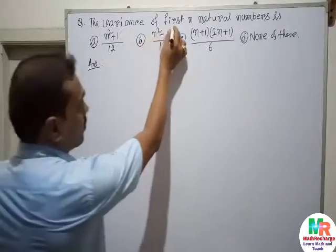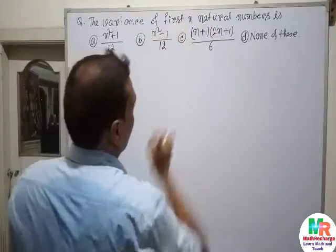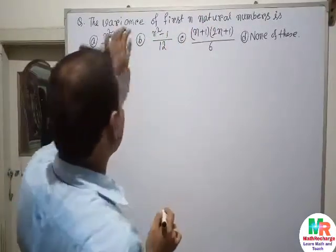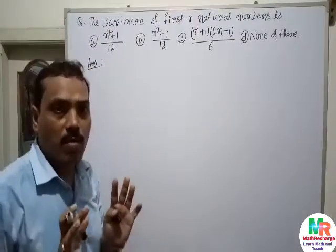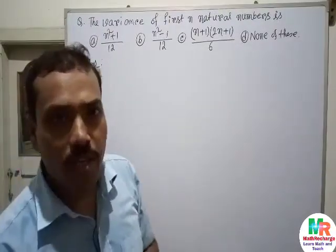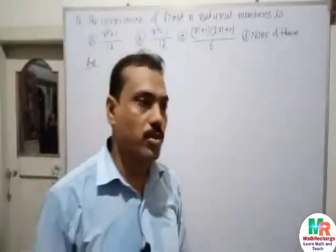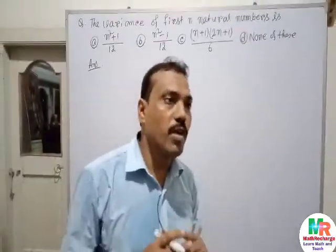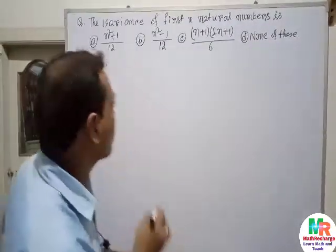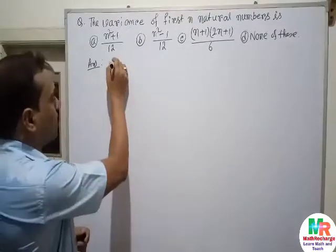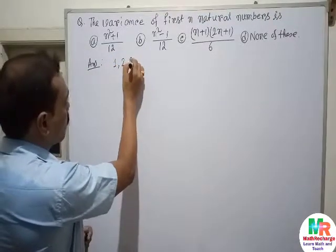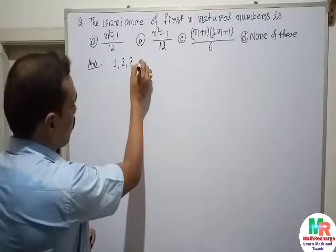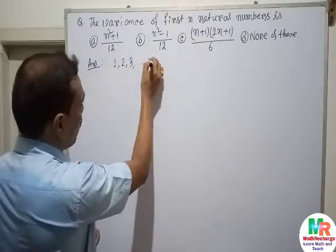The question asks for the variance of the first n natural numbers. We consider the first n natural numbers: 1, 2, 3, ..., n.